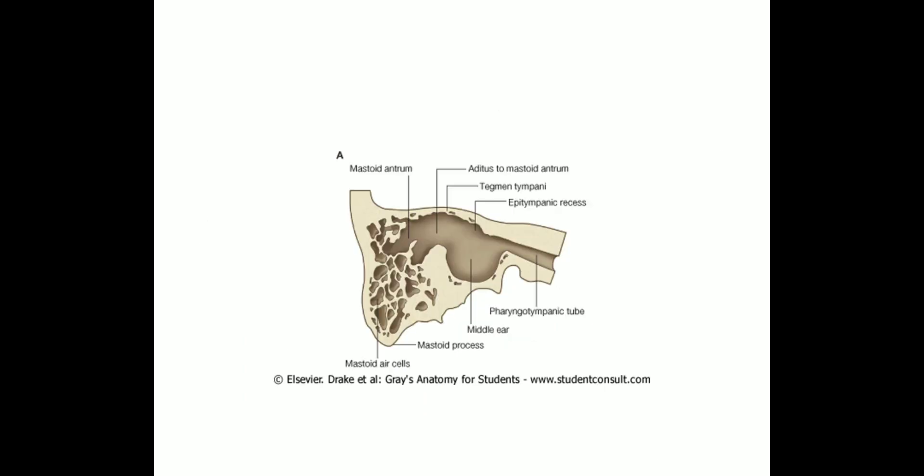Now let me start with acute mastoiditis. The mucosa of the eustachian tube, middle ear, aditus, and antrum are continuous, known as the middle ear cleft. So inflammation from the middle ear will naturally extend to the mucosa of the mastoid antrum. But mastoiditis occurs only when the inflammation extends beyond the mucosa and involves the mucoperiosteum of the mastoid cells or the bony walls of the mastoid air cells. Just involving the mucosa of the mastoid cells is not mastoiditis.